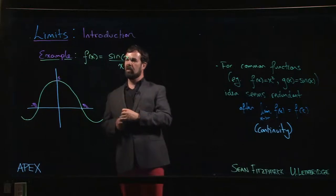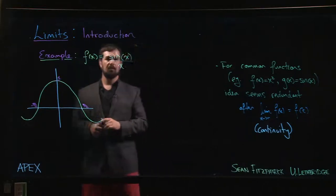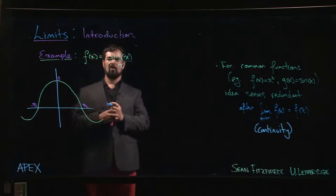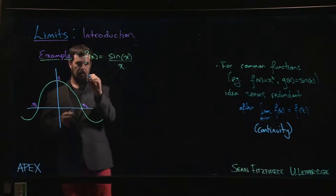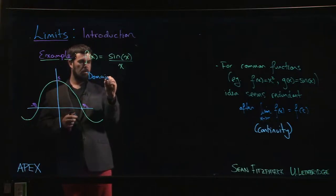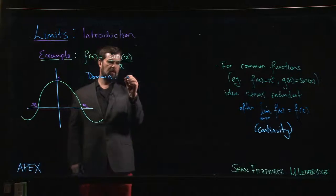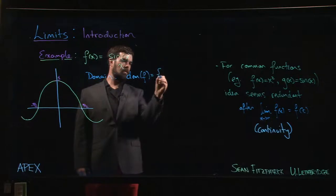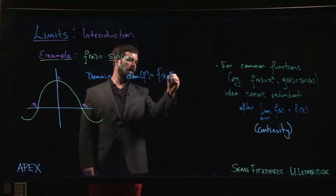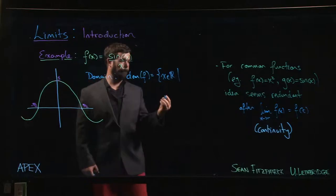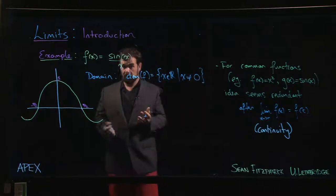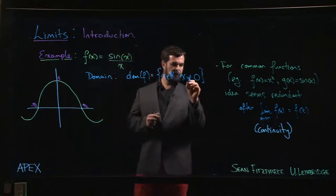But if we look at a function like f of x equals sine x over x, well, the sine function is defined everywhere. X is defined everywhere. But we're doing the quotient, and we know that you can't divide by zero. And so if we were going to look at the domain, we might say something like this: the domain of f is the set of all real numbers x except x cannot equal zero. So zero is not an allowed value for this function.